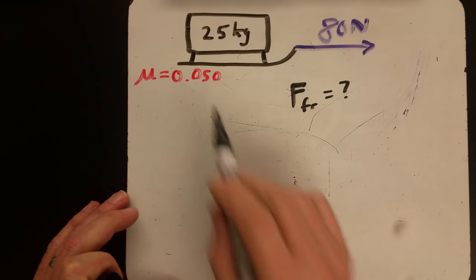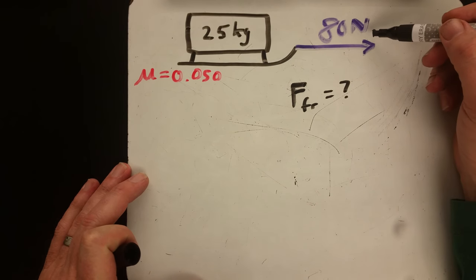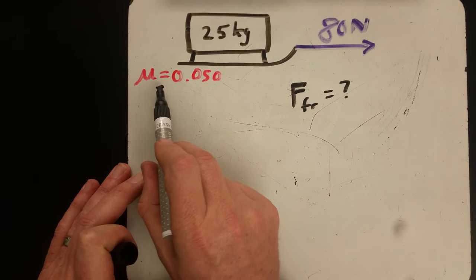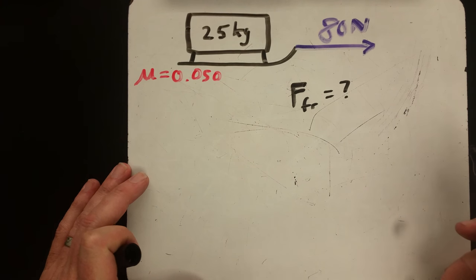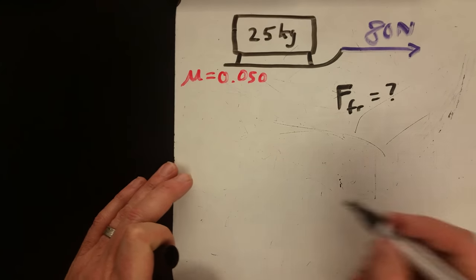Okay, so in this problem we have a sled that is 25 kilograms being pulled by a rope with 80 newtons, and the friction coefficient mu is 0.050. They're asking what's the force of friction, so as always we start with a force diagram.